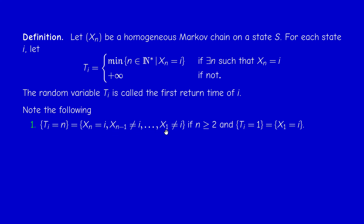If you follow the evolution of the system, we could start with state i, but the next time it will be different, up to the nth step, at which we reach state i again. If n equals 1, T_i equals 1 means that starting from i, the very next step I will be in i again. Usually we are interested in the conditional probability that T_i equals n, given that X_0 equals i.